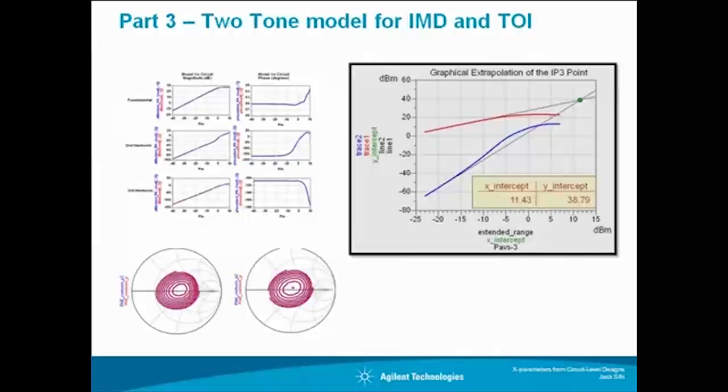In part 3, I will show you how to generate a two-tone model that can be used to determine the intermodulation distortion products and third-order intercept.